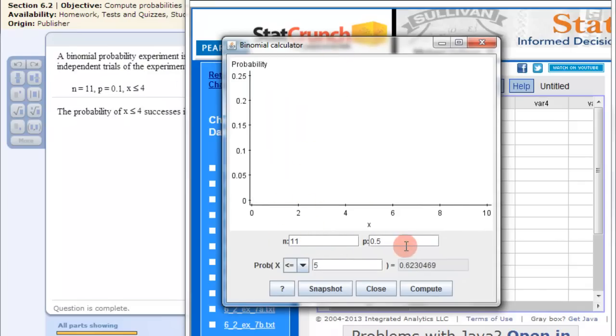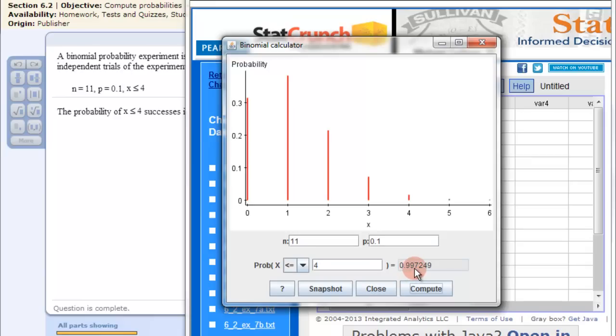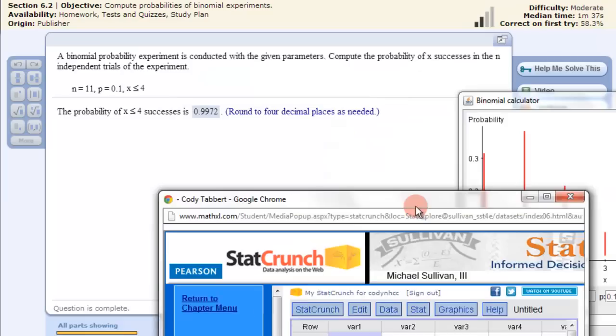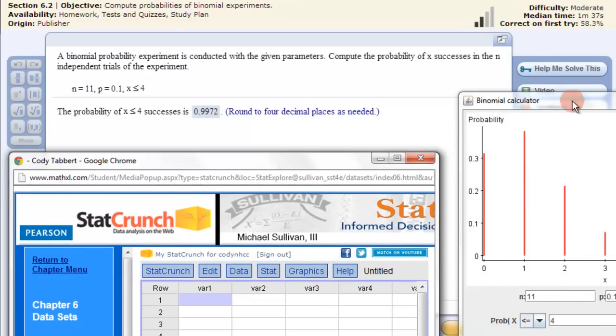We enter our 11, our 0.1 and then this time we put in a 4 here and then it's less than or equal to so we already have that and click compute. So 0.9972. If we look at the answer here. See it's 0.9972.